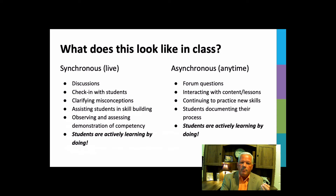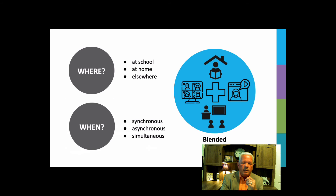What does that social piece look like? In live or synchronous settings: discussions, checking in with students, clarifying, communicating, assisting, observing — students are active in their learning. If asynchronous — not occurring at the same time — it's dialogue, discussions, posted writings, feedback, interacting with lesson content, and students reflecting and documenting their learning. Students are active, not passive. This can happen anywhere, depending on how you design it. The when — synchronous or asynchronous or both — depends on the outcomes you're looking for.